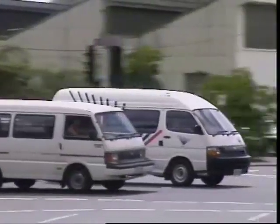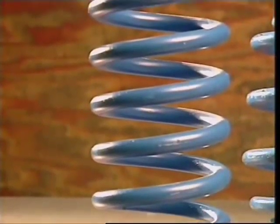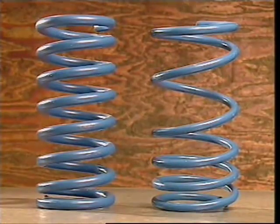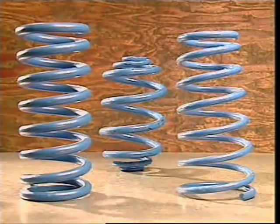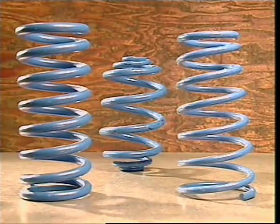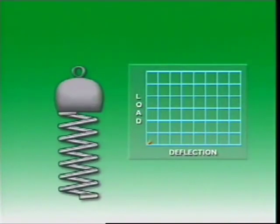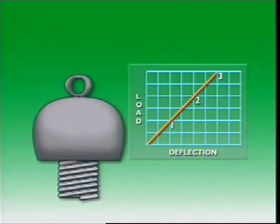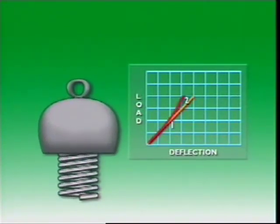A light commercial vehicle has springs that are robust and fairly stiff, while on a small passenger car they are lighter and more flexible. The coils may be evenly spaced or of uniform pitch, or unevenly spaced. The wire can be the same thickness throughout or it may taper towards the end of the spring. The spring itself may be cylindrical, barrel shaped, or conical. Generally, a cylindrical spring with uniform diameter wire and uniform pitch has a constant deflection rate — its length reduces in direct proportion to the load applied. When the pitch is varied, the deflection rate varies too, and the spring is then said to have a progressive rate of deflection.